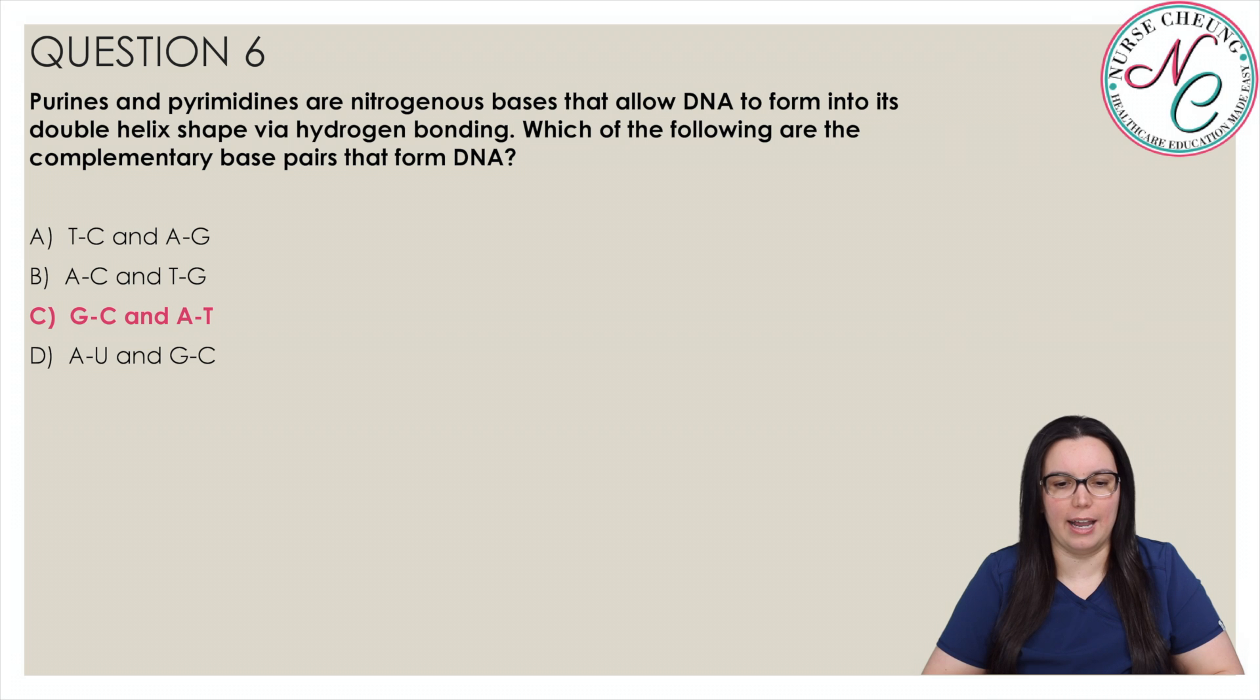Base pairs combine in only a few ways because of the unique nature of the hydrogen bonds that hold them together. Cysteine bonds with guanine with 3 hydrogen bonds. Adenine and thymine require only 2 hydrogen bonds, as does adenine and uracil in RNA. These base pairs are typically written using their letter symbols, G to C and A to T.